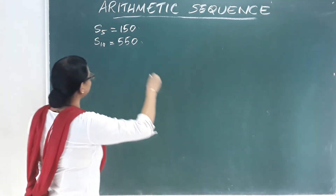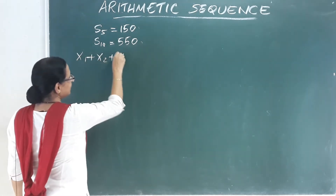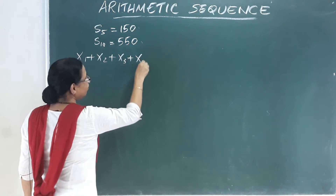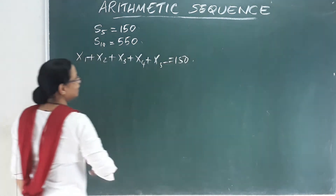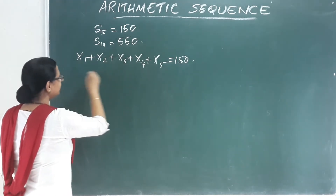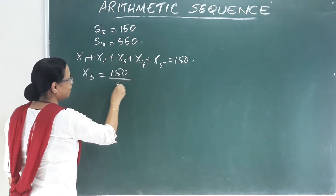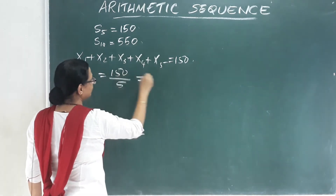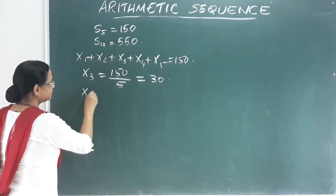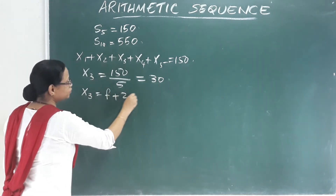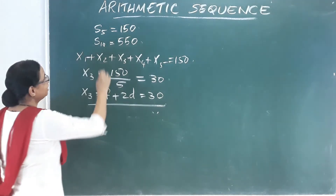The sum of the first five terms is 150. So x1 plus x2 plus x3 plus x4 plus x5 equals 150. Dividing by 5, the middle term x3 equals 30. So the third term x3 equals f plus 2d equals 30.